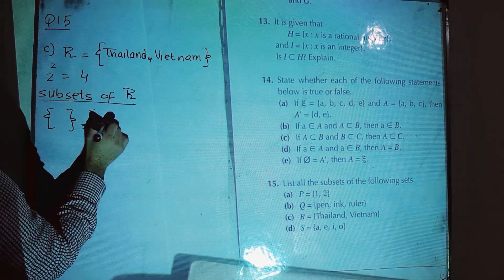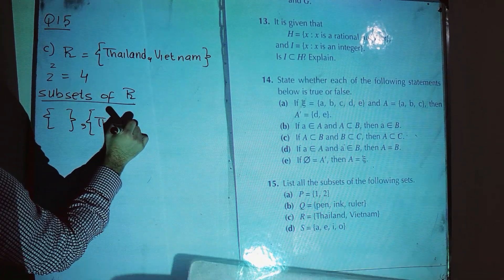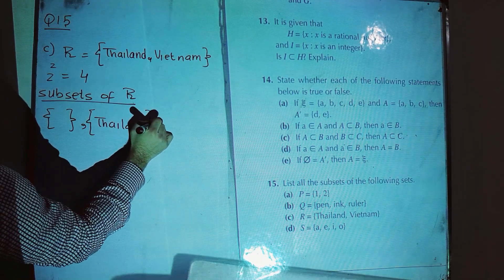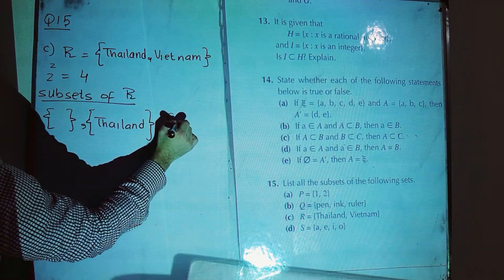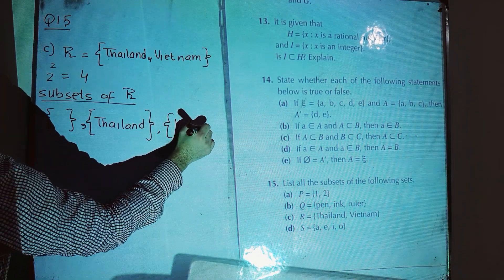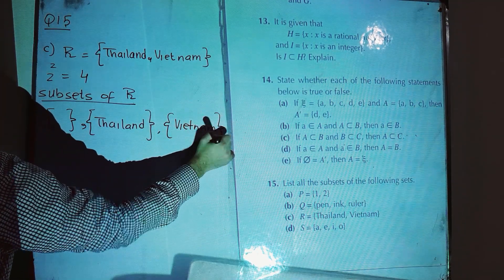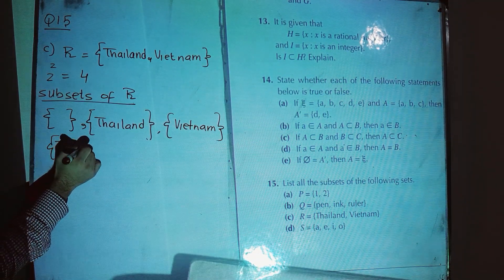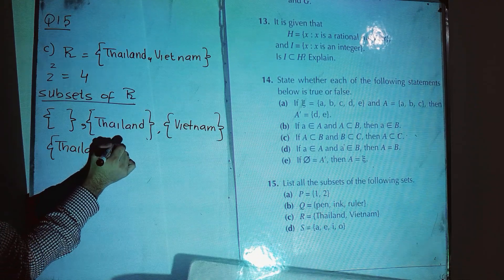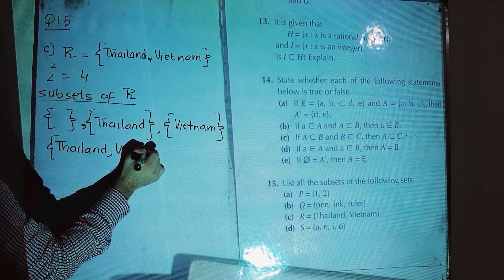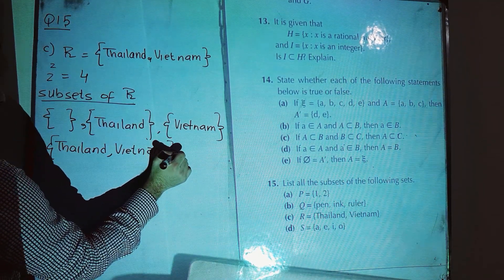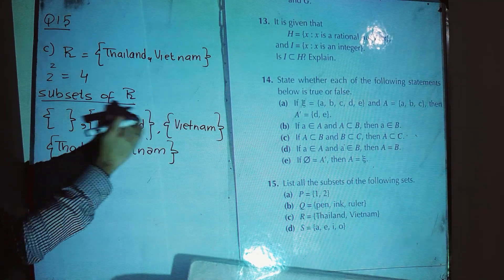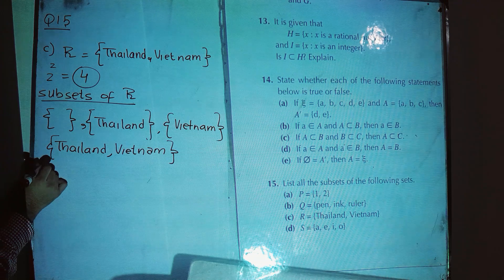Then we have the subset with single element {Thailand}, then {Vietnam}. Then the subset with two elements: {Thailand, Vietnam}. One, two, three, four — that's it, we have four subsets for this one.